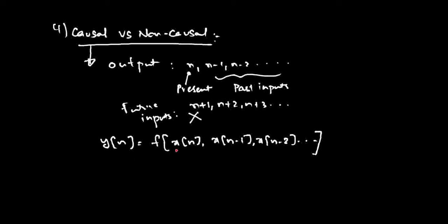Causality is very important to physically realize a system. If it is a non-causal system, it is very difficult to physically realize because it is easy to accrue the past inputs, but it is difficult to anticipate the future inputs of a signal. You don't know what the future input will be, and that's the reason why it is hard to physically realize a non-causal system.